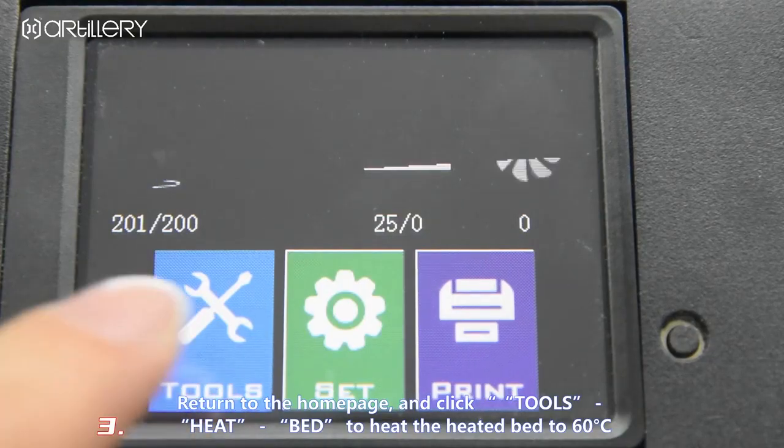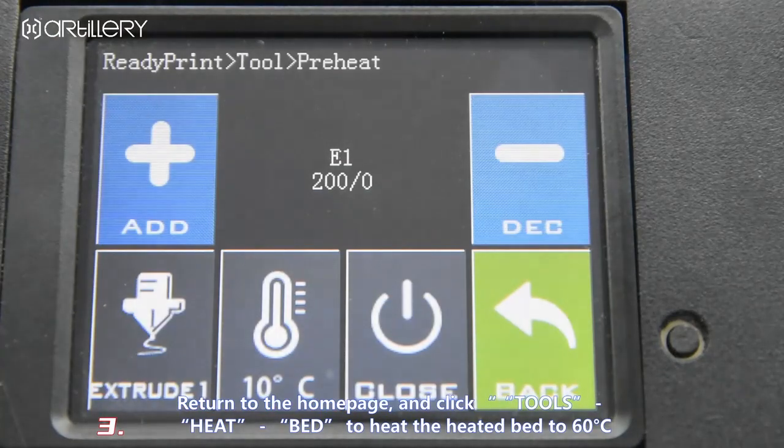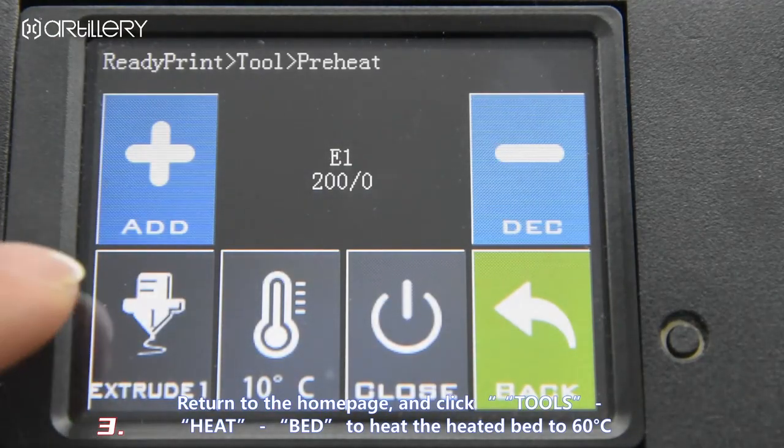Return to the home page and click, choose, heat bed to heat the heated bed to 60C.